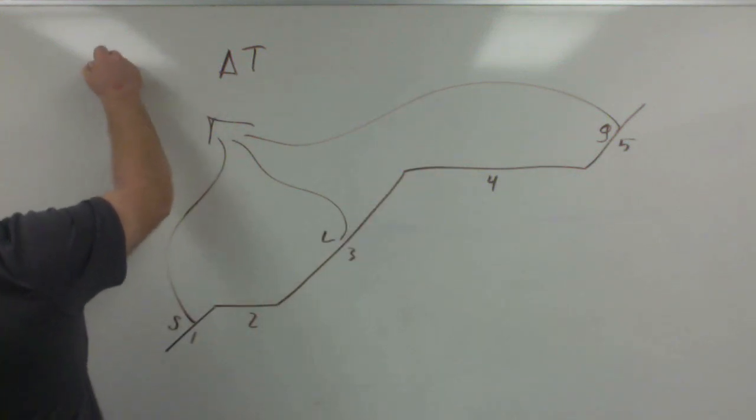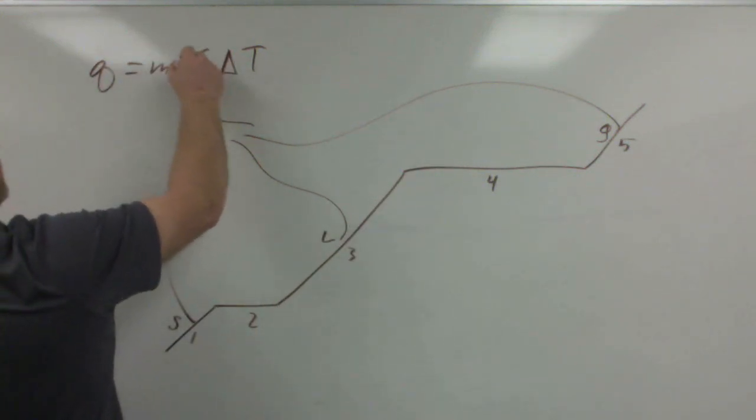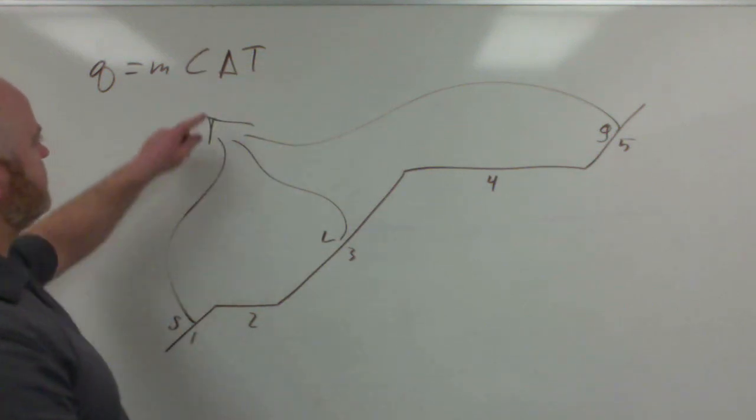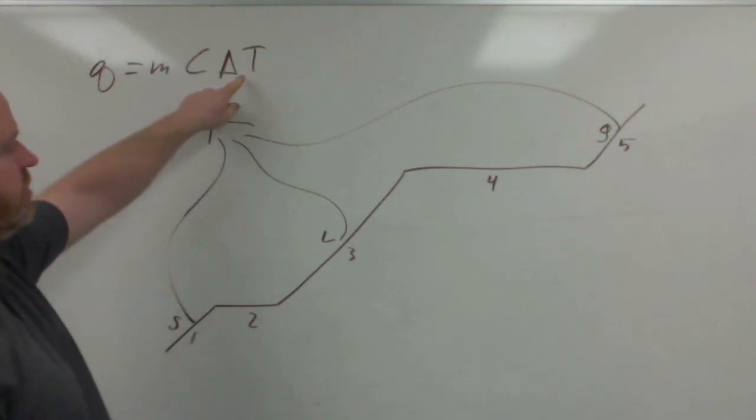And an equation was m*c*ΔT, where we had the specific heat capacities and the changes in temperature.